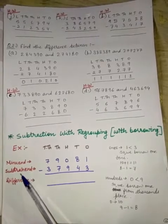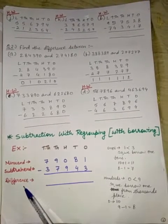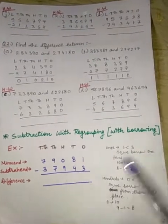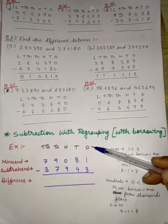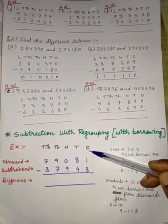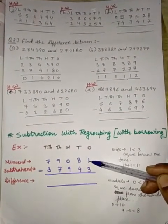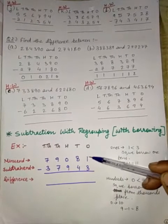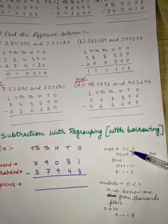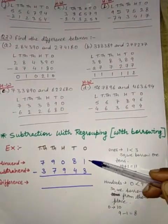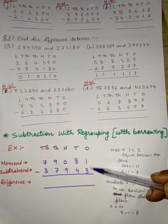This is the minuend, this is subtraction, and the answer will be the difference. Again we will do the same thing. We will start from one's place. You see, the number in one's place is 1 and in this it is 3. So 1 is less than 3. Can you minus 1 from 3? No.